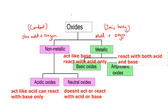It is easy to remember: an acidic oxide has acidic nature, so it reacts with base but cannot react with acid. A neutral oxide — from the name you can identify — does not have any specific acidic or alkaline nature, so it does not react with acid or base.